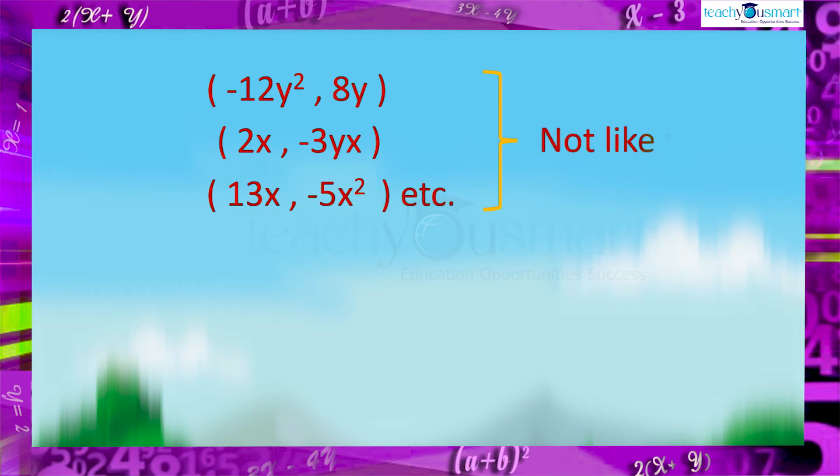But minus 12y square and 8y, 2x and minus 3yx, 13x and minus 5x square, etc. are not like terms, because their variables or powers are different, that is they are unlike terms.